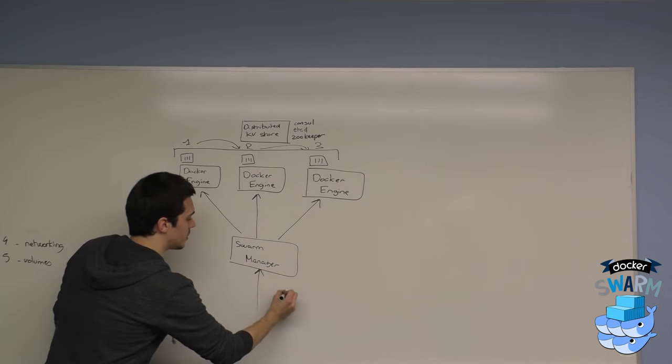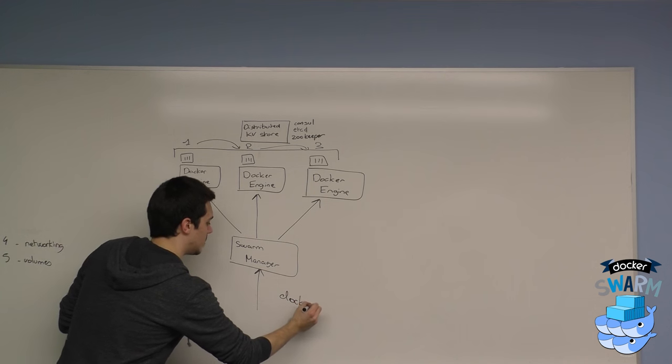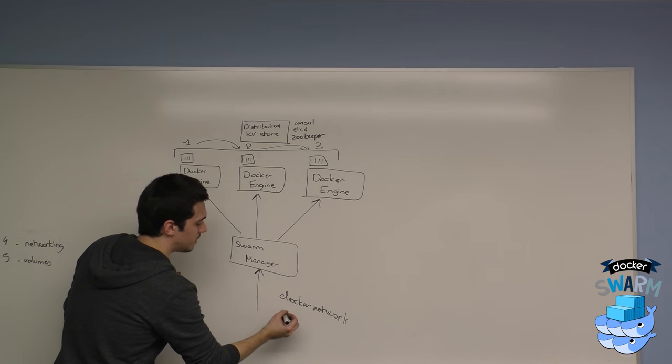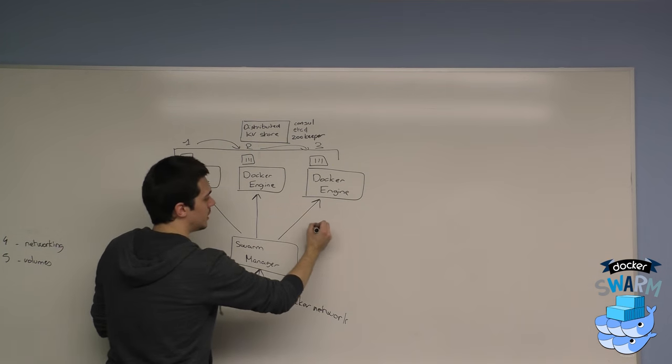This is done through the Docker network command. And you can create a network of type overlay.